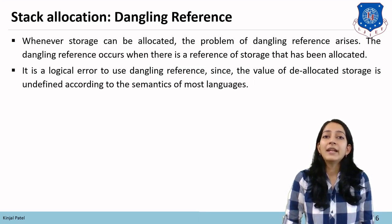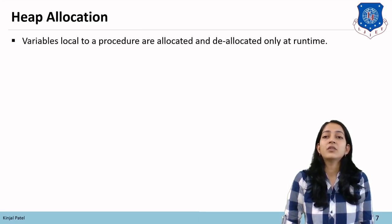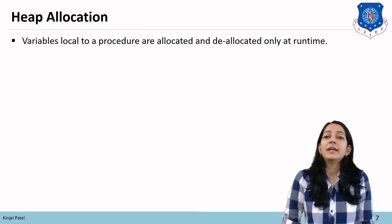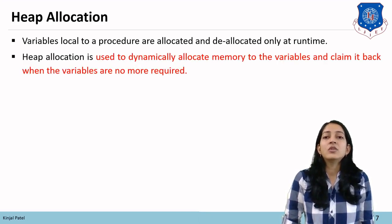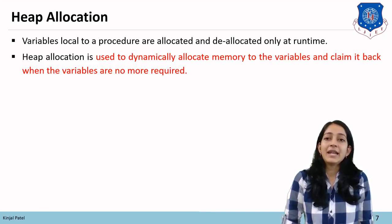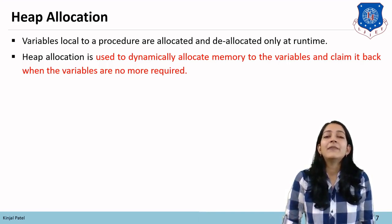To solve the dangling reference problem, the heap allocation strategy is used. Heap allocation is also a runtime memory management scheme, but variables that are local to procedures are allocated and deallocated only at runtime. Heap allocation is used to dynamically allocate memory to variables and reclaim it whenever those variables are no longer required.